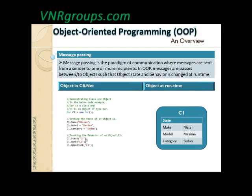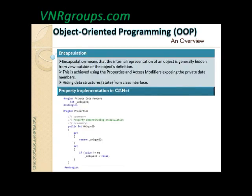For example, when setting C1.make equal to Nissan, you don't know what's happening internally with the make implementation, or even when calling dot start, you don't know what the internal logic is doing. Similarly, in real-time, if you're playing an audio system, all you care is that the audio should be audible. When you hit play it should start, when you hit pause it should stop. As an end user, you don't worry about what's happening internally.